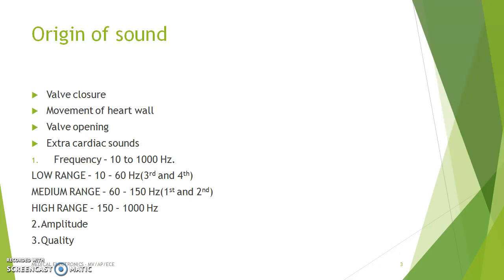The low range is from 10 to 60 hertz and it is represented by the third and fourth heart sounds. The medium range is 60 to 150 hertz and it is represented by the first and second heart sounds. The high range is about 150 to 1000 hertz, and it also relates to amplitude and quality.